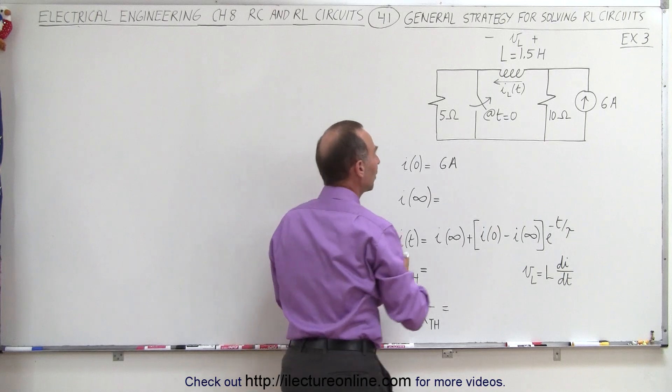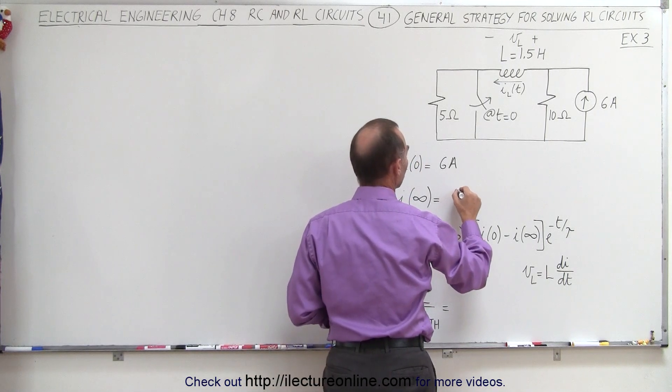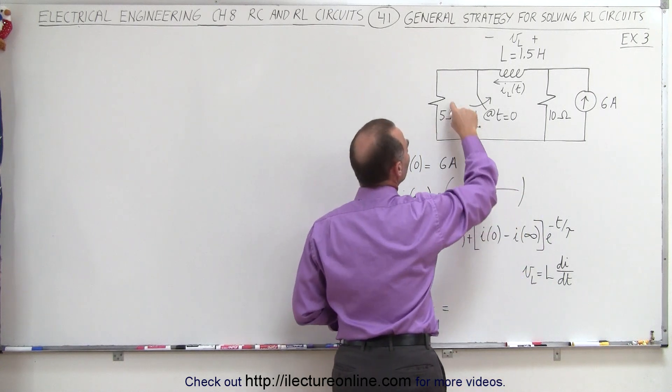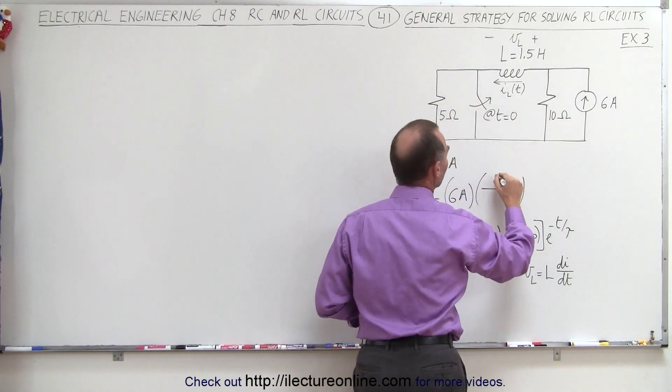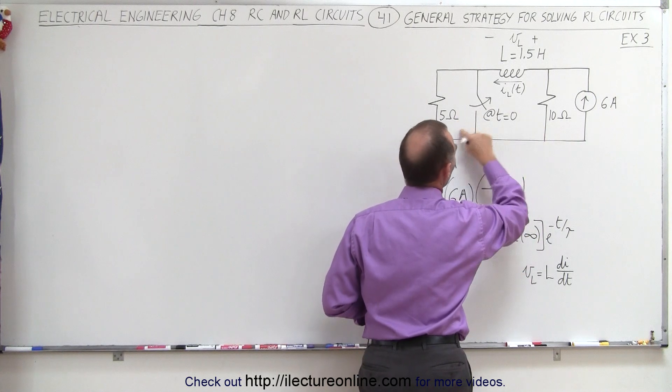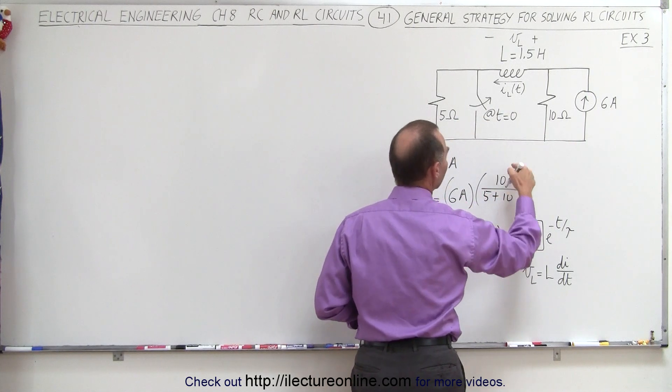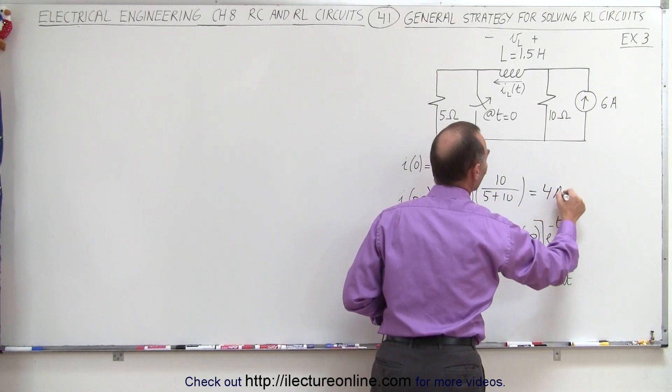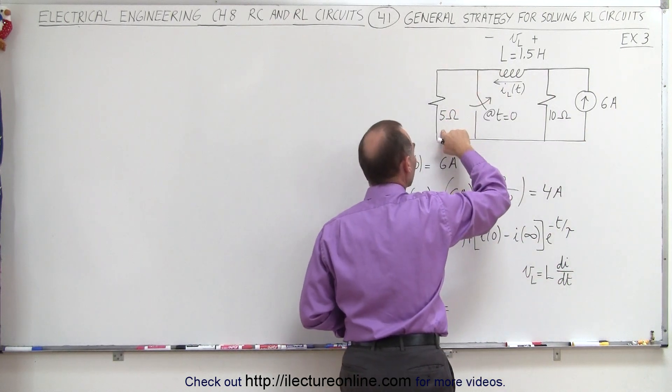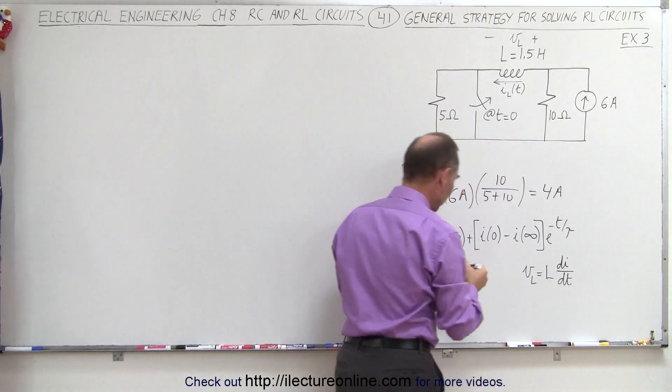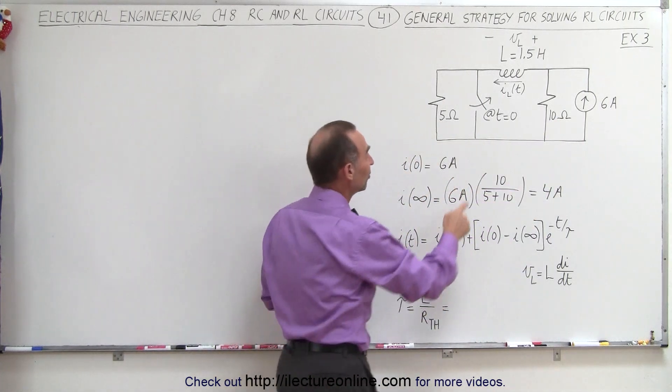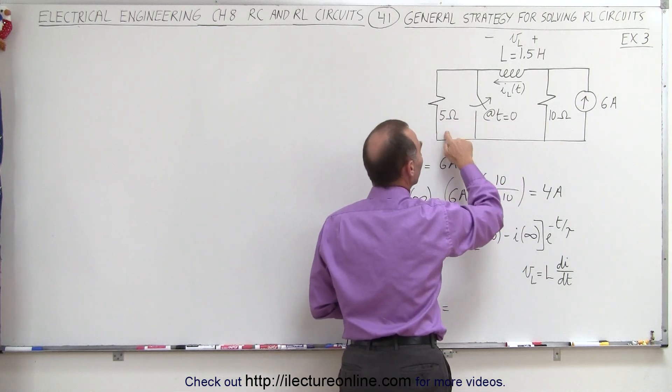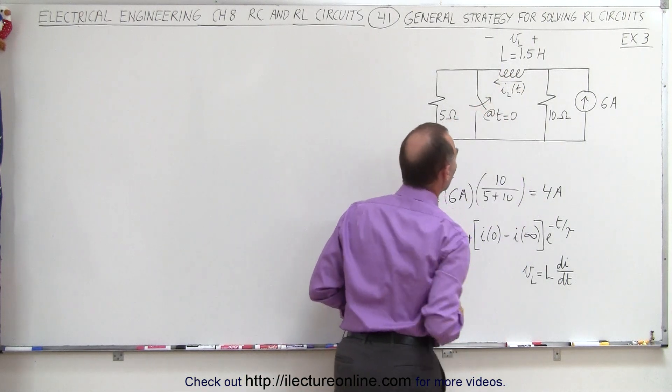So the way to figure that out, that will be equal to the total current supplied by the source times the ratio of the resistance in the other branch which is 10 ohms divided by the total resistance 5 plus 10, that's 10 over 15, that's 2/3 to 6 amps or 4 amps of current will flow through the smaller resistor and 2 amps will flow through the larger resistor. Just so you can see that since this is half the resistance of this, it should of course carry double the current and it's the same current as will flow through the inductor.